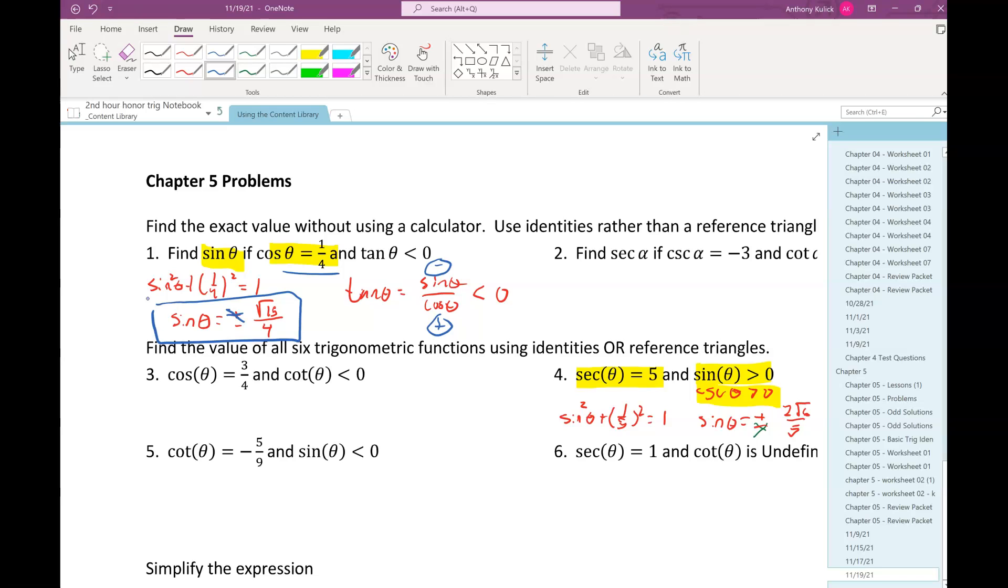Figure out what was positive or negative. Well, because tangent is sine over cosine, and I know tangent is negative. Cosine, we know the value for it. It's absolutely positive. So, that means sine has to be negative to make tangent negative. Cool?